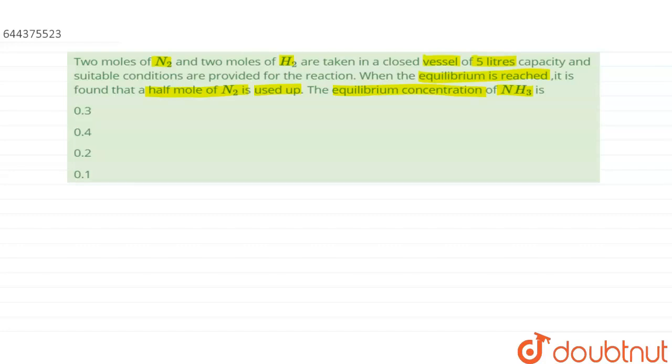So let us first write the reaction for this: N2 plus H2 gives NH3. On balancing this equation, we get N2 plus 3H2 gives 2NH3. It is given in the question that when equilibrium is reached,